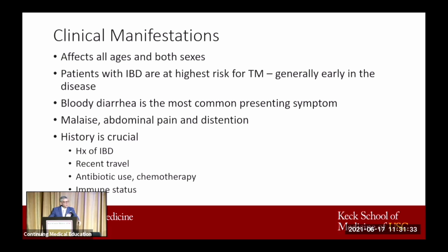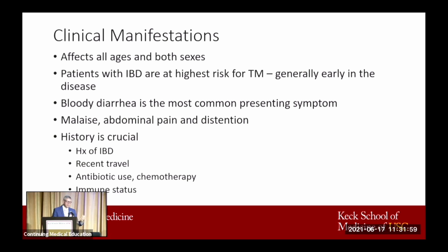Bloody diarrhea is the most common presenting symptom we see, along with malaise, abdominal pain, and distension. For the residents in the audience, history is very crucial. You want to know if they have a history of IBD. You want to know about recent travels, which may point to a bacterial cause. You want to know about antibiotic use for C. diff. And then of course their immune status — whether they have been receiving chemotherapy or are immunocompromised, such as the HIV patient — which may lead you to think about one etiology over another.